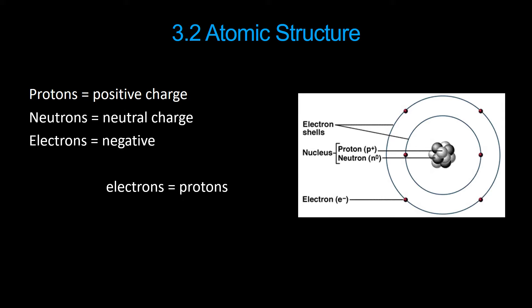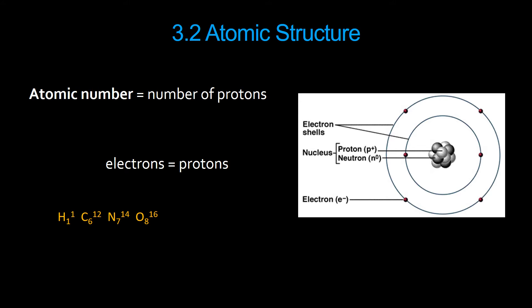In any neutrally charged atom, the number of electrons will equal the number of protons. The atomic number of an element is equal to the number of protons. We've got the four most abundant elements of any living organism: hydrogen, carbon, nitrogen, and oxygen. The atomic number is one for hydrogen, six for carbon, seven for nitrogen, and eight for oxygen.